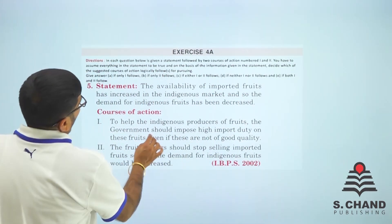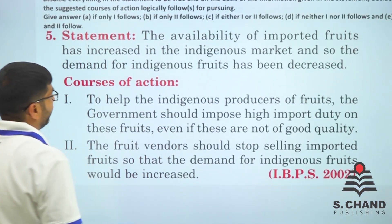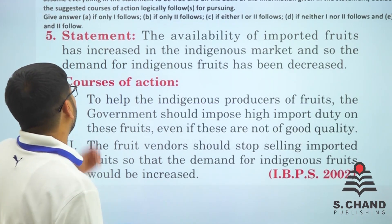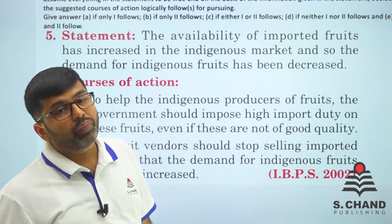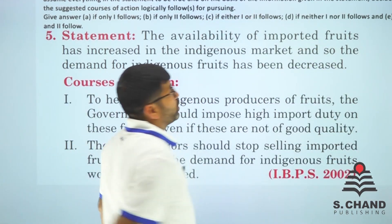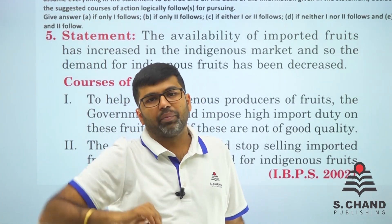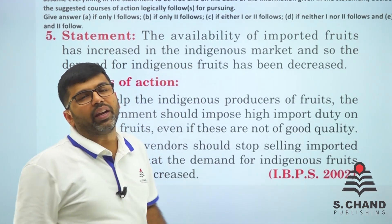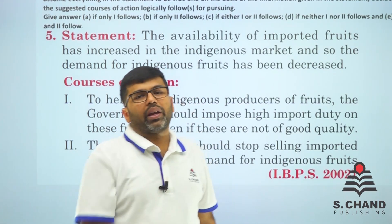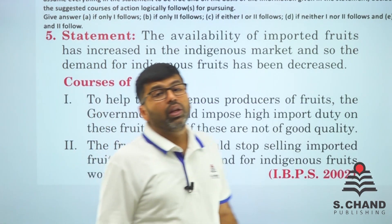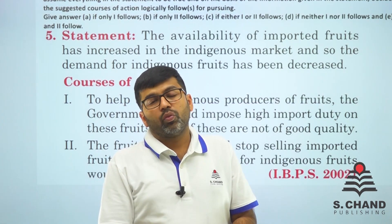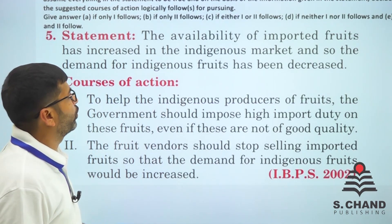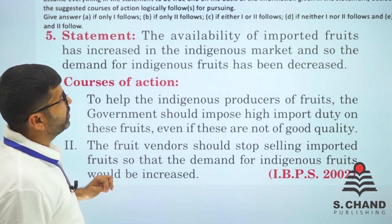Question 5: 'The availability of imported fruits has increased in the indigenous market, and so the demand for indigenous fruits has decreased.' Course of action I: 'To help the indigenous producer of fruits, the government should impose high import duty on these fruits, even if these are not of good quality.' The statement itself signals this is wrong.